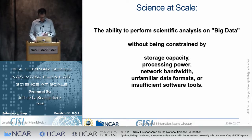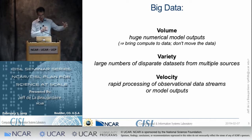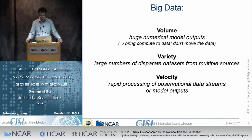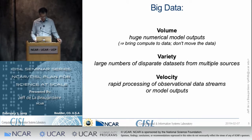When I say big data, I'm using the traditional definitions of things like volume — huge numerical model outputs — which really means we want to bring the computing to the data and try to avoid moving the data around. Variety — large numbers of disparate data sets from multiple sources. And velocity — like if we want to do rapid processing of observational data streams or model outputs as they're being generated.